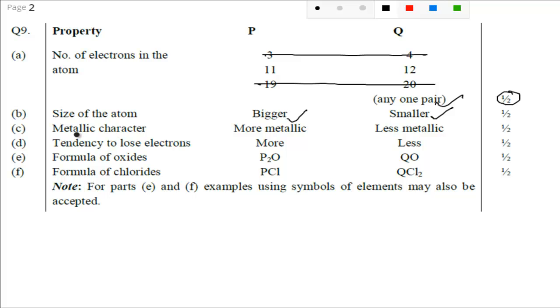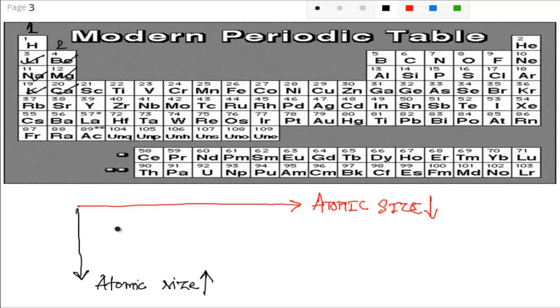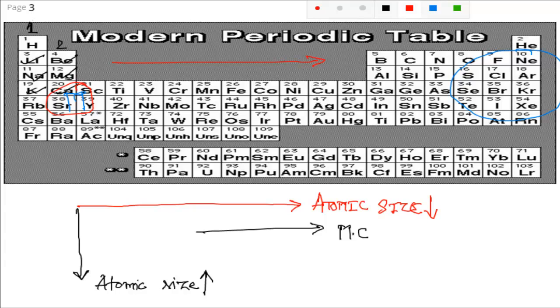Now see the third one is your metallic character. When you move from left to right, what will happen? Metallic character - I am writing it here MC. Simple guys, there is no need to mug up. You know that this is your non-metal and this one is your metal. When you are moving from left to right, first you are getting metals and then you are getting non-metals. Metallic character is decreasing because first you are getting metal then you are getting non-metal.